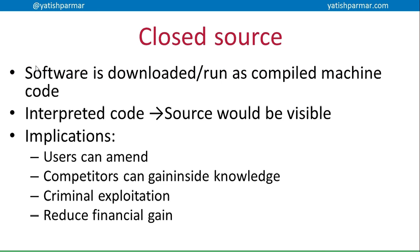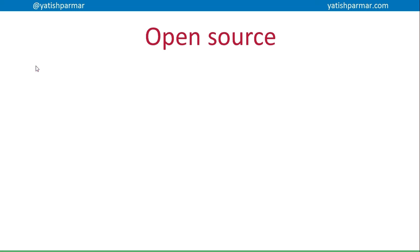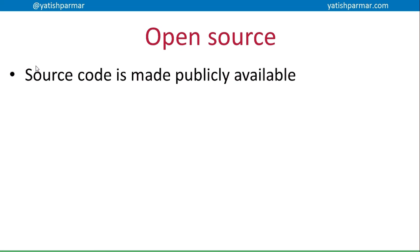Competitors are the biggest implication that companies would be concerned with, because that obviously reduces financial gains. You can imagine if Microsoft supplied the source code for Microsoft Office to everybody — someone else would be able to use that code to create their own version of the program. That's why companies are interested in creating closed source software: to protect their financial standing.